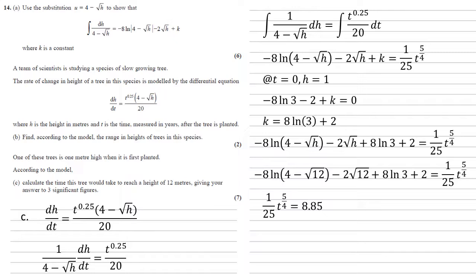So we know that 1 over 25 times t to the 5 over 4 equals 8.85. Timesing both sides by 25 gives us that t to the power of 5 over 4 equals 221.28.